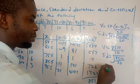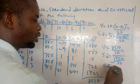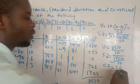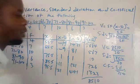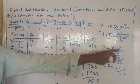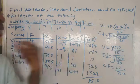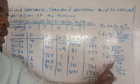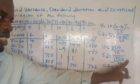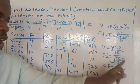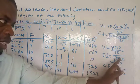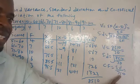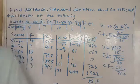For the coefficient of variation, take your standard deviation and divide it by the mean, which is 74.5. So: variance equals the sum divided by 30; standard deviation equals the square root of that; and coefficient of variation equals standard deviation divided by 74.5. Use your calculator for the final values.